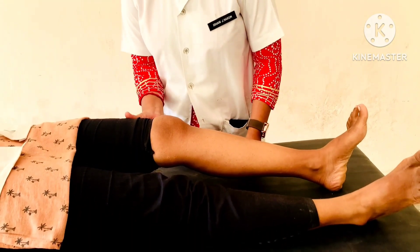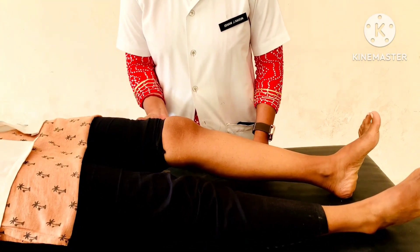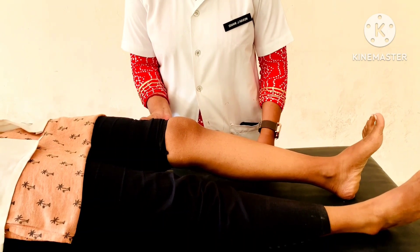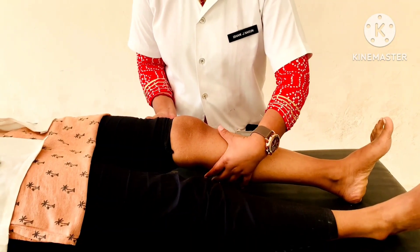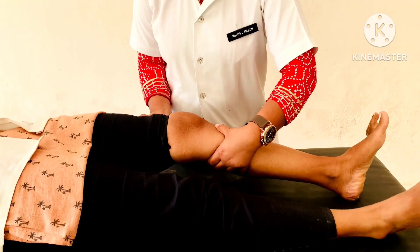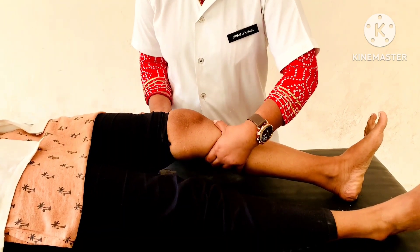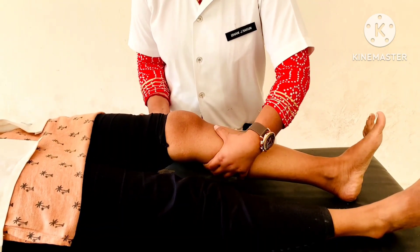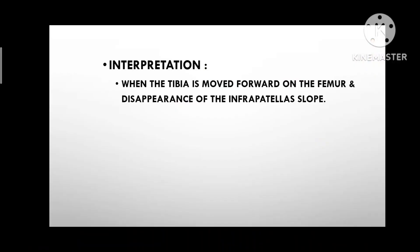The patient's femur is stabilized with one of the examiner's hands while the proximal aspect of the tibia is moved forward with the other hand. The hand on the tibia applies the translation force. Interpretation: when the tibia is moved forward on the femur, a disappearance of the infrapatellar slope is noted. There are some modifications to perform this test.